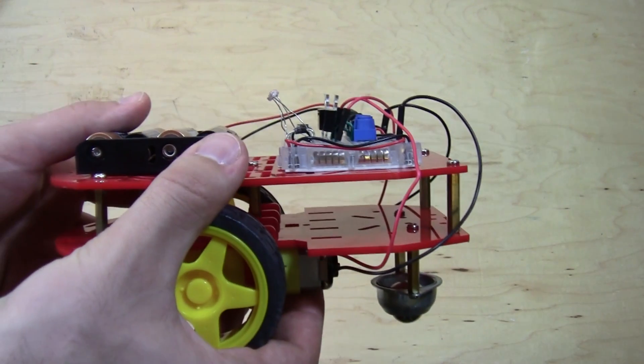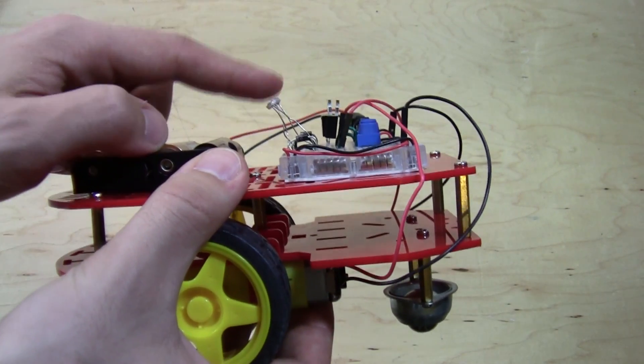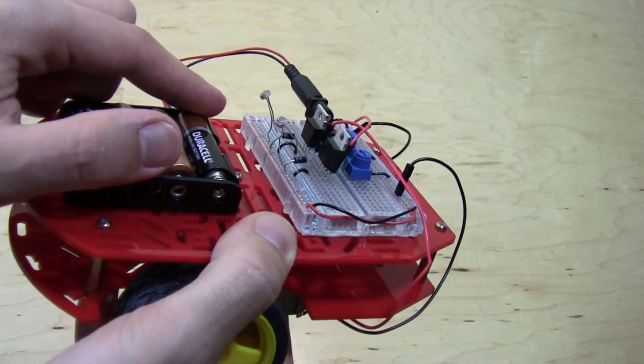If we come back around to the top of the robot, you can see the most important part of the circuit, which is these two light sensors that are sort of sticking up like little antenna.